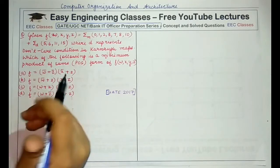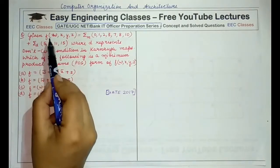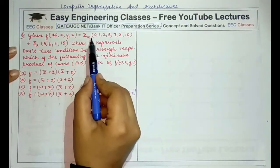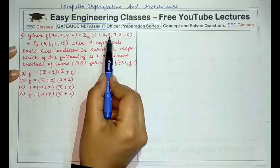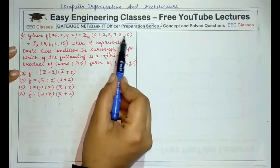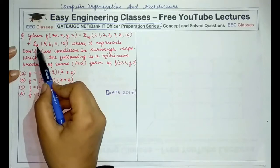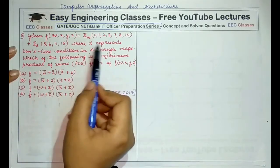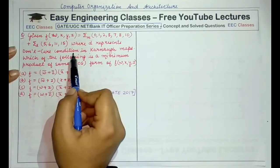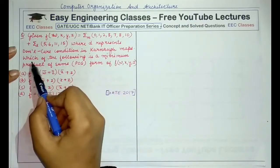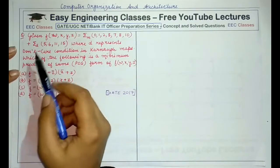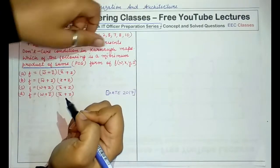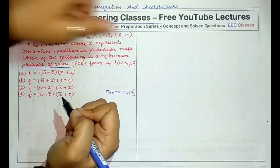So let's start with this question. Given F(W, X, Y, Z) = Σ(0, 1, 2, 3, 7, 8, 10) and Σd (don't care terms) are 5, 6, 11, and 15, where D represents don't care condition in the Karnaugh map, which of the following is a minimum product of sum form of F(W, X, Y, Z)?